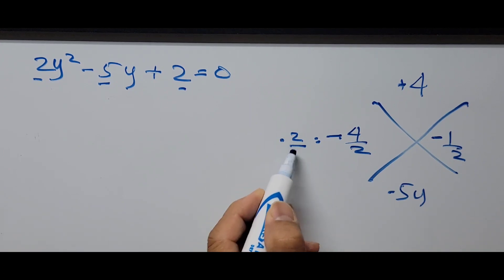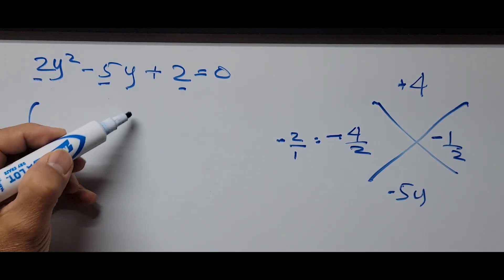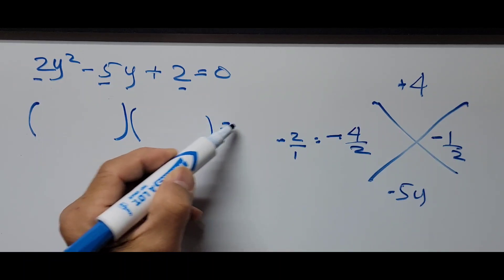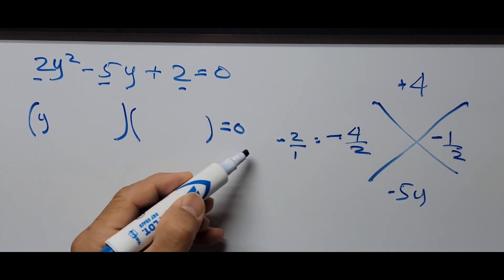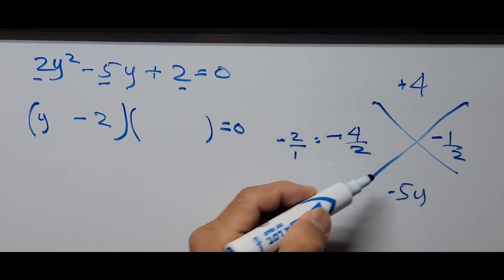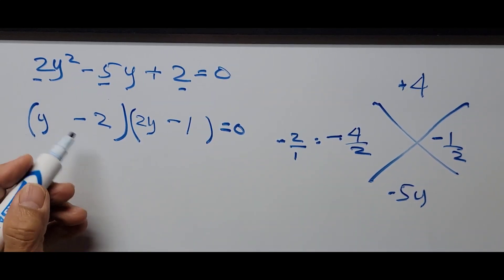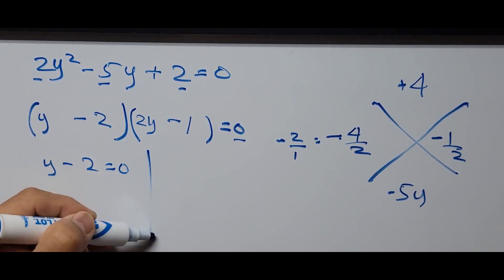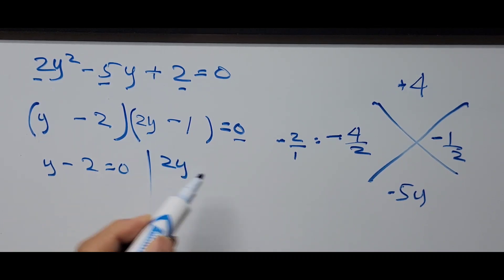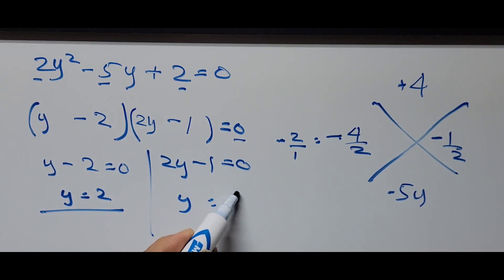Building the binomial factors and equating to zero: the first factor gives y minus 2, and the second gives 2y minus 1. Setting each equal to zero: y minus 2 equals 0, and 2y minus 1 equals 0. Solving these, y equals 2 and y equals one half.